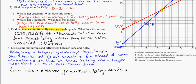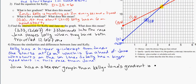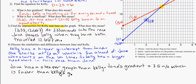Jane's gradient, which we found already, was 3.5 meters per second, is 3.5 meters per second. Which is faster, making that comparison, than Kelly's gradient of 2 meters per second.